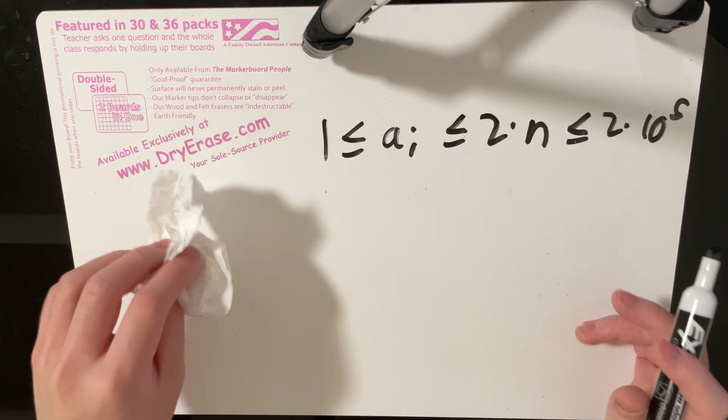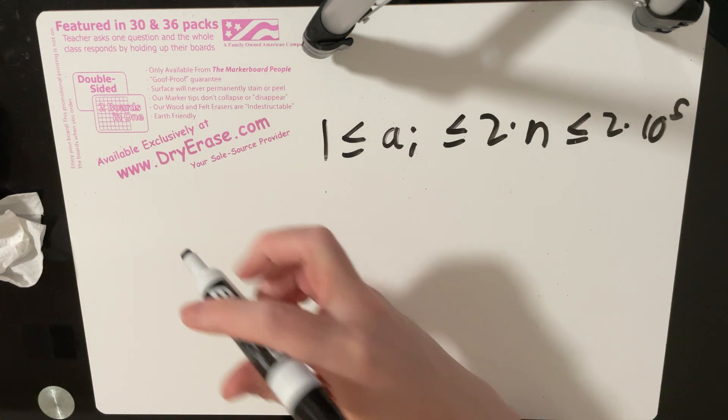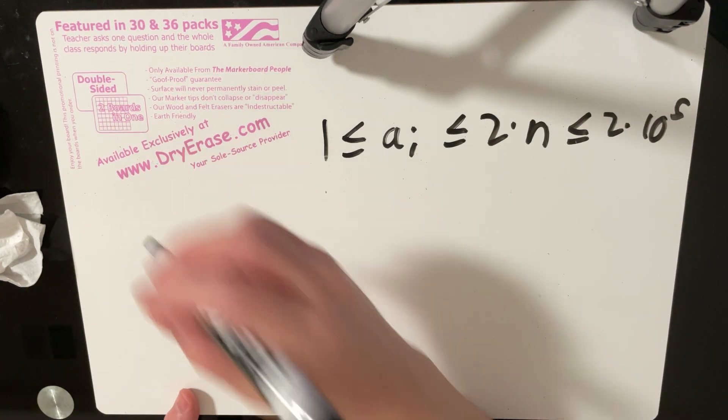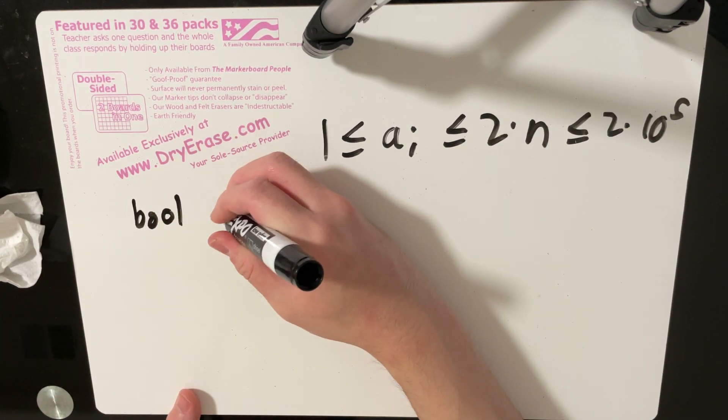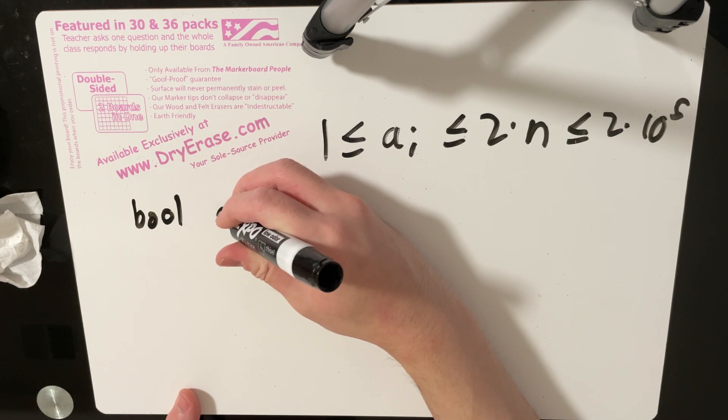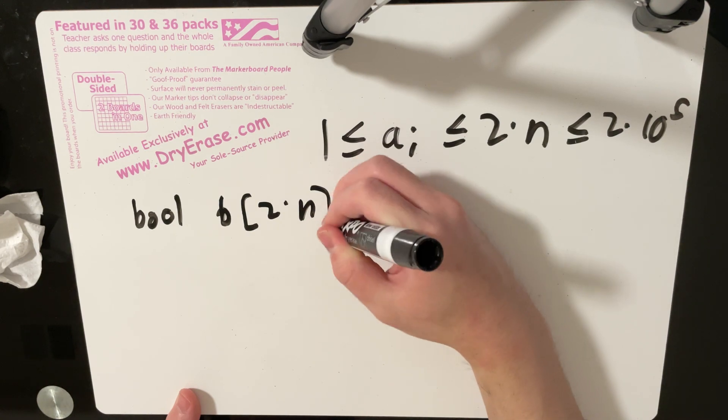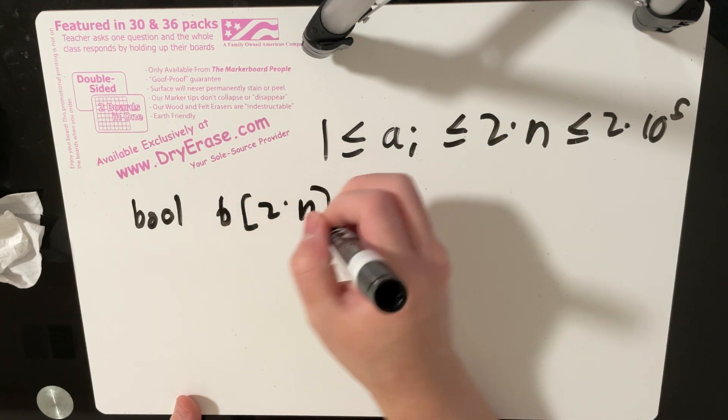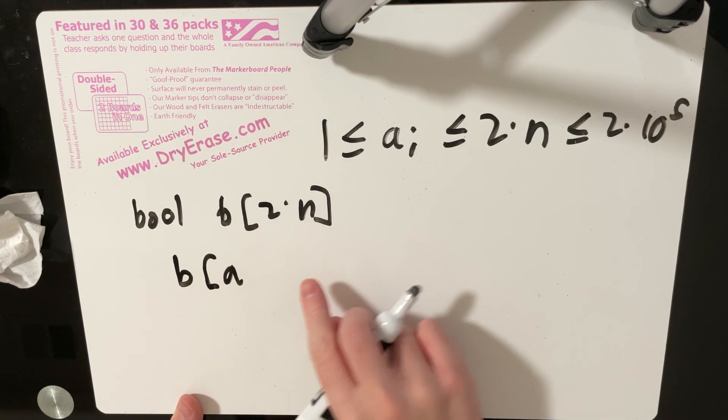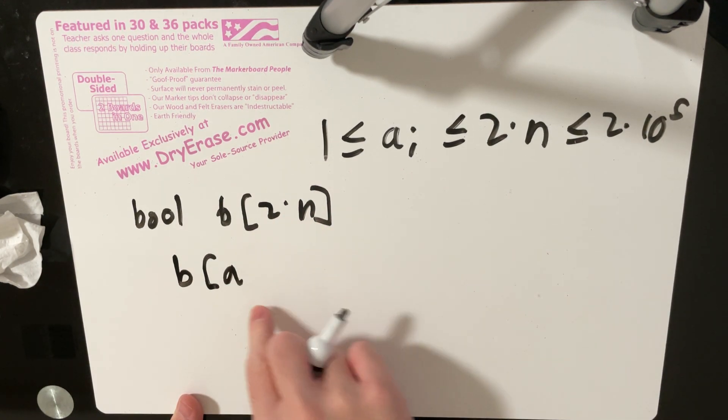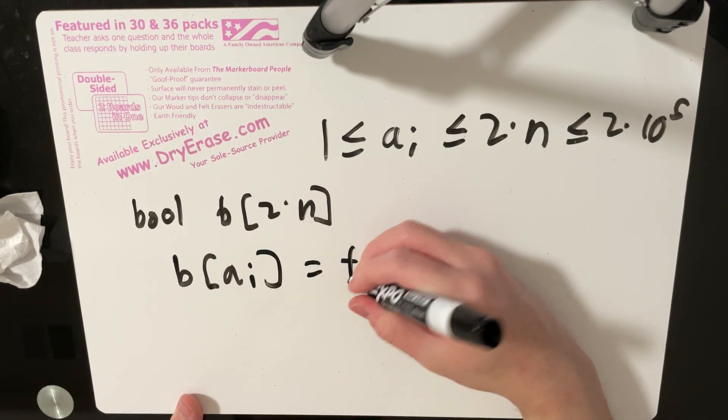So what we can do instead is we can create a boolean array. So this boolean array will be of size 2 times n. I'll call it b. And its size is 2 times n. And you essentially want to mark an index as true if there exists an i, if that number exists in this array a. So for all i, you essentially want to say this is true.